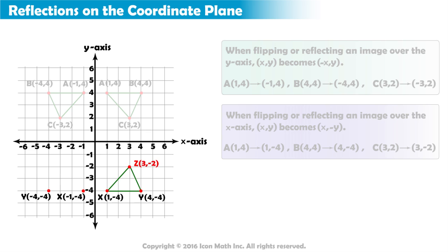Finally, point Z(3, negative 2) will be located three places away from the y-axis at negative 3, negative 2.